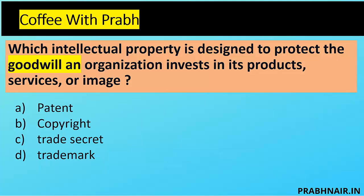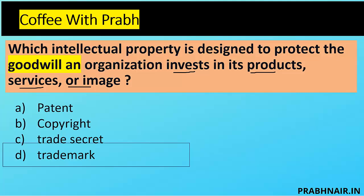Next coffee short: which intellectual property is designed to protect goodwill? An organization invests in its product, service, or image — that investment is its goodwill. Patent protects ideas, copyright protects expression of ideas, trade secret is internal to the organization. What is left is trademark. Even when selling products, we differentiate using trademark. We pay for the Apple logo or the Lacoste logo — that is how goodwill is built. The answer is D — trademark.